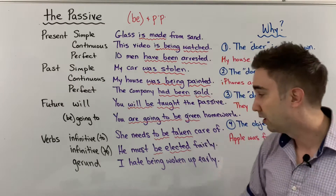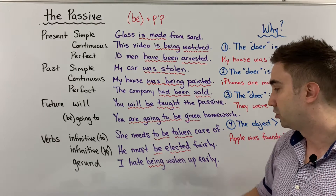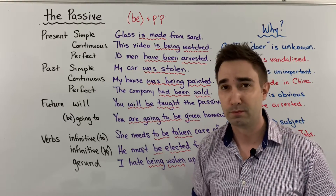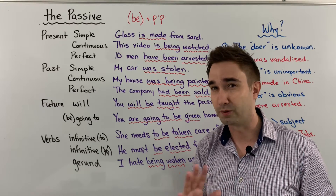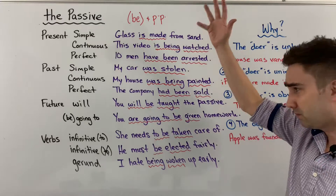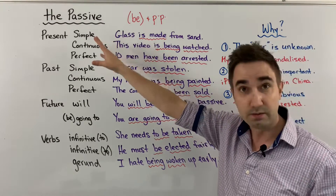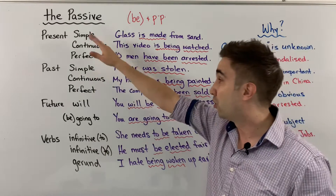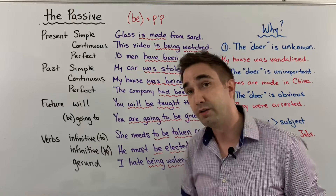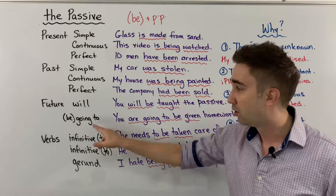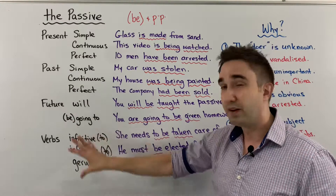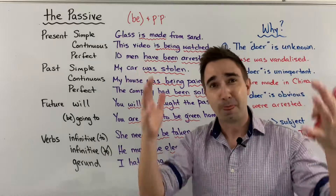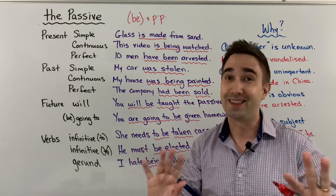Gerund means verb-ing. A verb like 'hate' is always followed by ing. So: I hate being woken up early. My kids every morning — daddy! And I hate it. Do you like being woken up early? I don't think so. So that is basically all of the different tenses we use with the passive. If you don't know what these tenses are, go back and watch some of our other videos about future with will, future with be going to, or our infinitive gerund video. That will help you understand the basic structure. Usually we follow subject, verb, object, but with the passive, not the same.